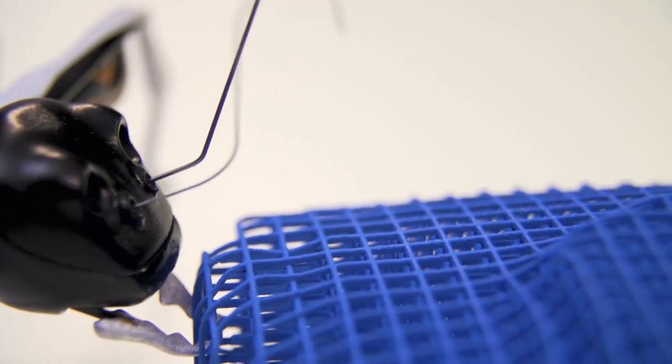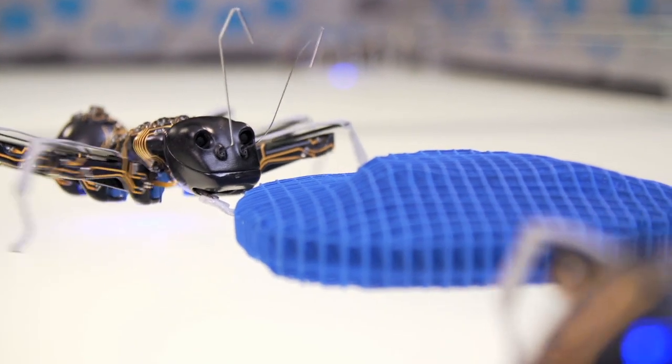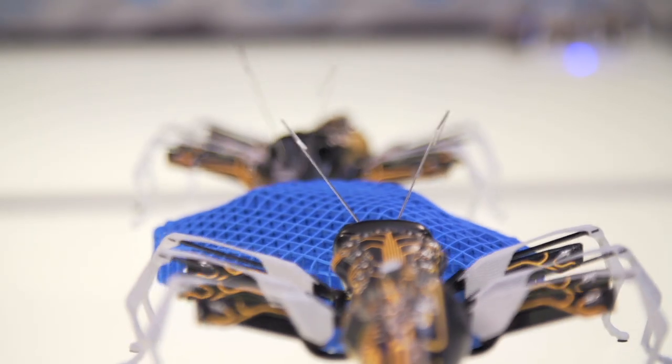Two bionic ants approach a blue 3D form that resembles a leaf made of plastic mesh. Using their silver mandibles, they grab onto the form and move it across the pen.